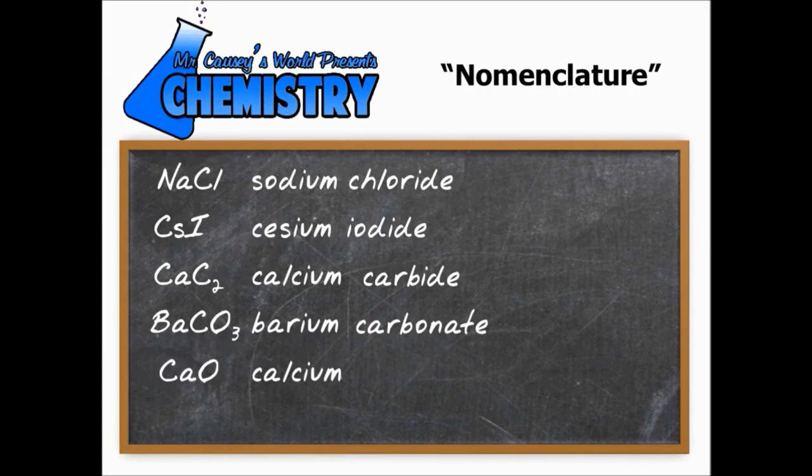CaO. Calcium oxide. Calcium is a plus two. Oxygen is a minus two. So it balances out real nice. And there are no worries about the ions. Calcium has one type of ion.